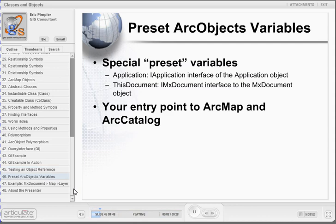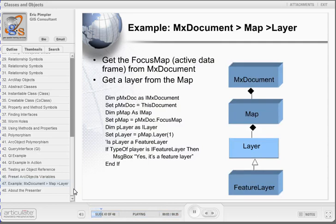ArcObjects has two preset variables that you will use as entry points in your programming tasks with ArcMap and ArcObjects. The first is the Application variable, which is a reference to the IApplication interface on the Application object. The second is ThisDocument, which is a reference to the IMxDocument interface on the IMxDocument object. ArcCatalog is slightly different in that you need to reference IGxDocument. In the code example, the first line declares an object variable referencing the IMxDocument interface. In the second line, set pMxDoc equal to ThisDocument, we see how you use one of the preset ArcObjects variables as an entry point into the ArcObjects programming libraries. Your code will invariably begin with these two lines for ArcMap coding efforts. Once you've gained access to ArcObjects through the preset variables, you're free to access other objects in the library.